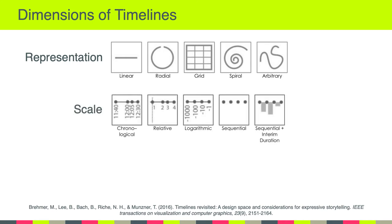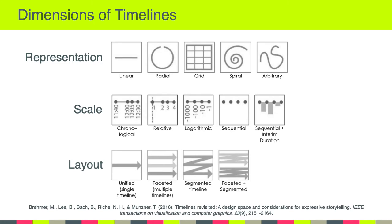The second dimension is scale — what scale are you going to use to represent time? One popular way is chronological, such as using dates or times. It can also be a relative scale, a logarithmic scale, a sequential scale, or a combination of sequential and interim durations. The third dimension to consider is layout: are you going to lay out your timeline on one single unified timeline, or use multiple or segmented timelines? The article will go into all of these dimensions in detail. I'm giving you this preview because I want to emphasize that everything is a design decision and should be made with intention.